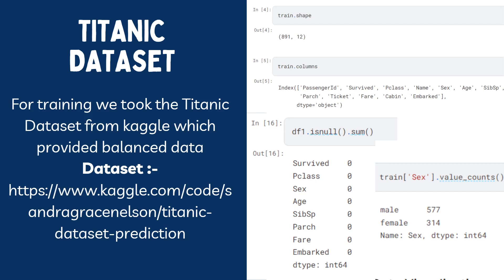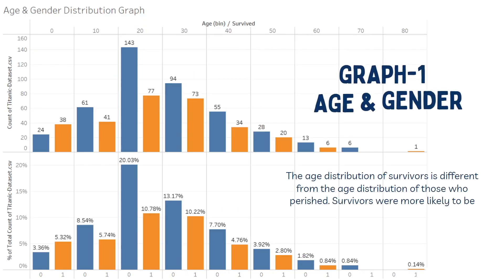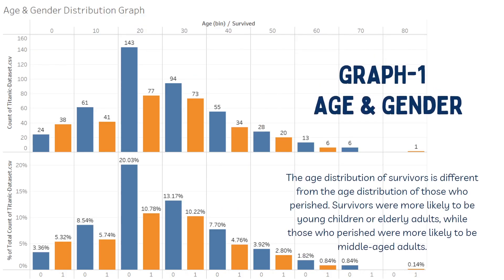I made it a balanced dataset. For the value count, as you can see, there are 577 male records and 314 female records. For downloading the dataset, you can access it from the link I'll be mentioning in the description. Now let's move on to our first graph.